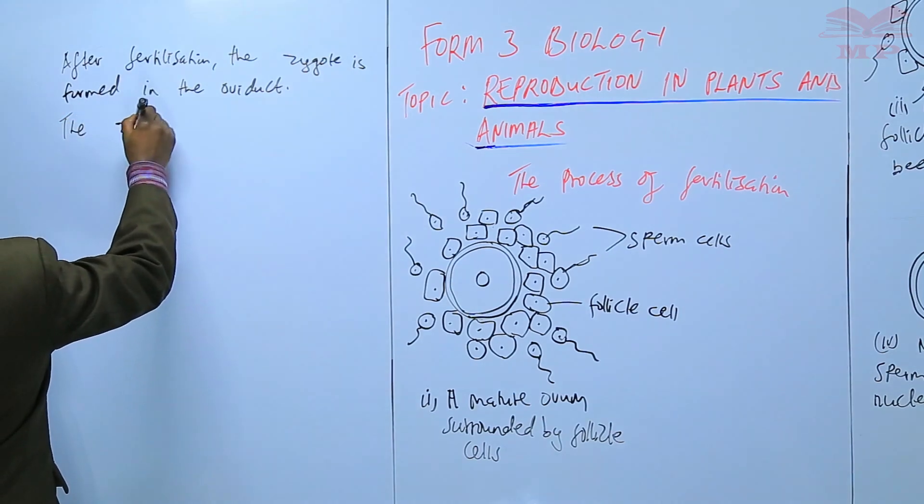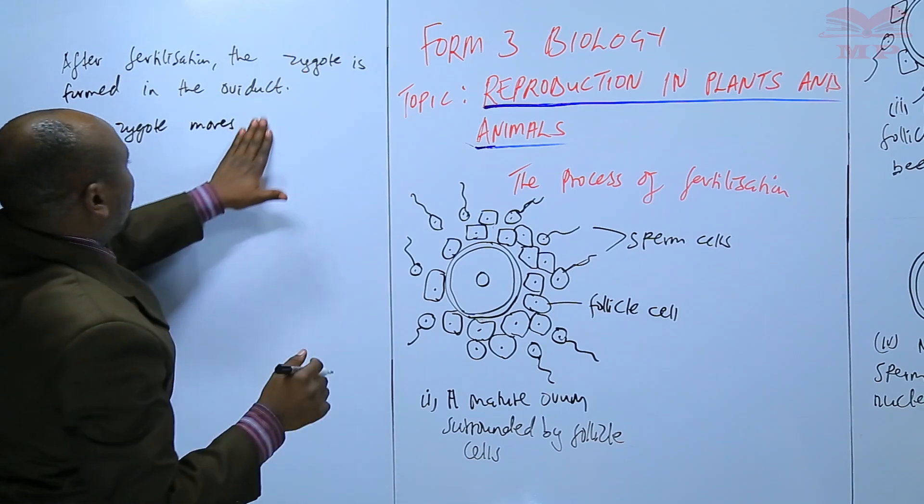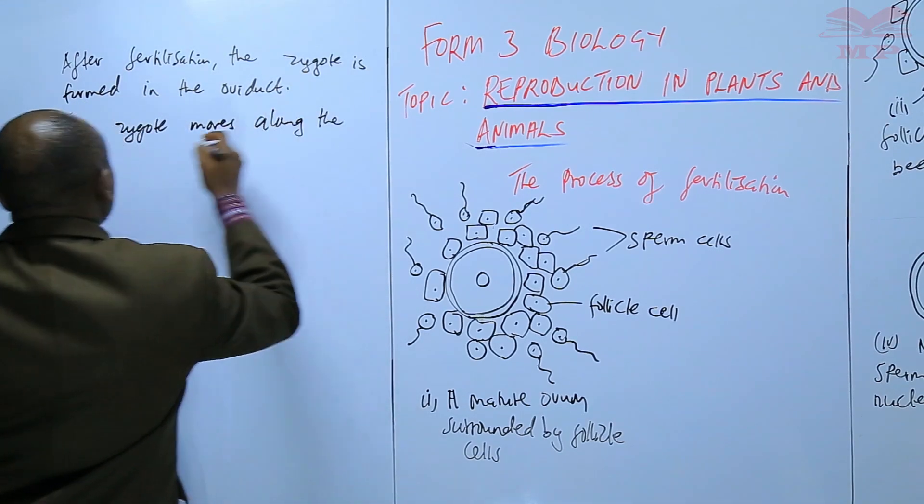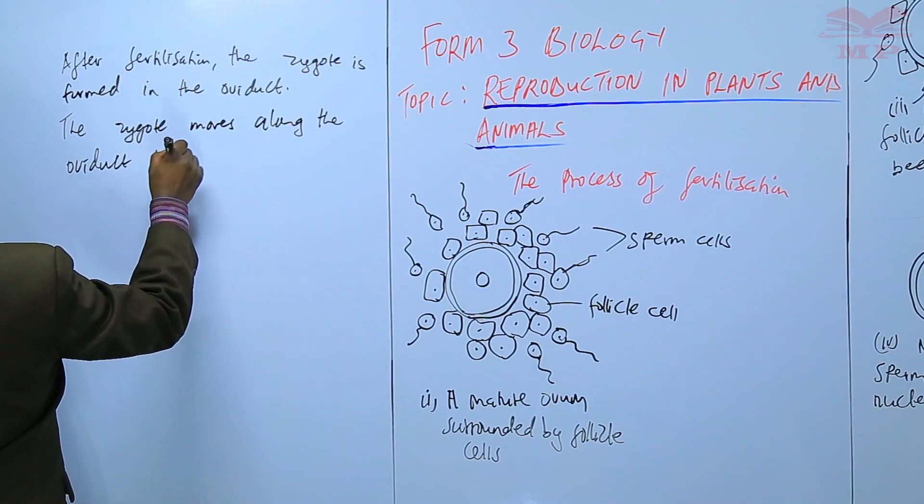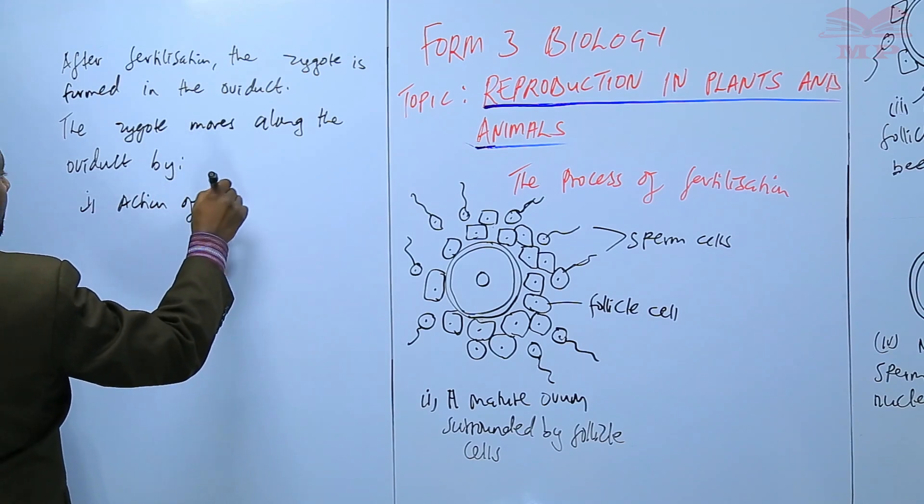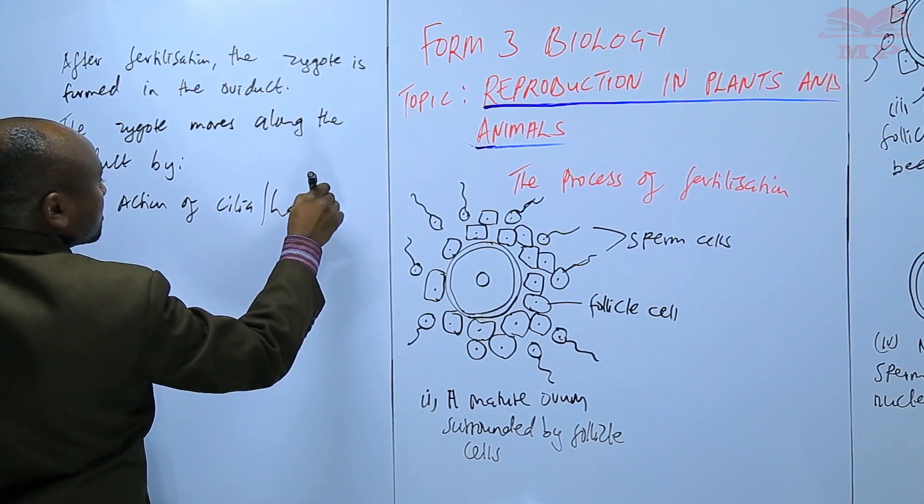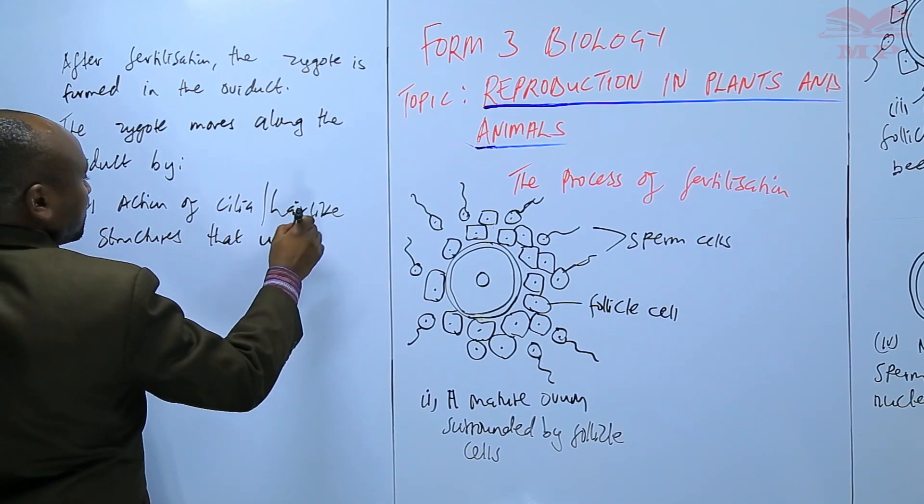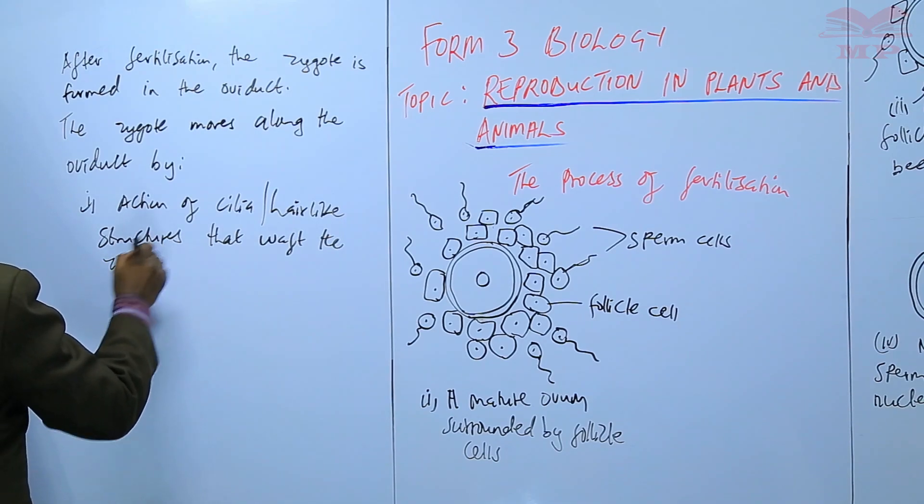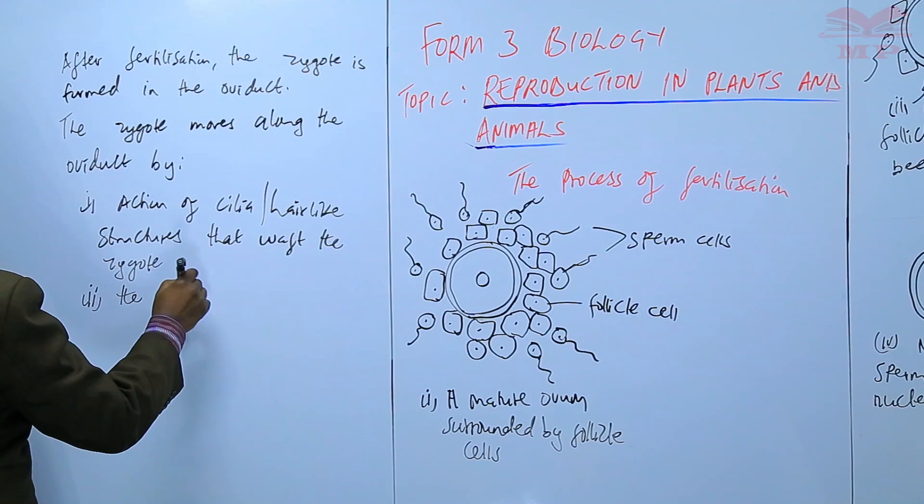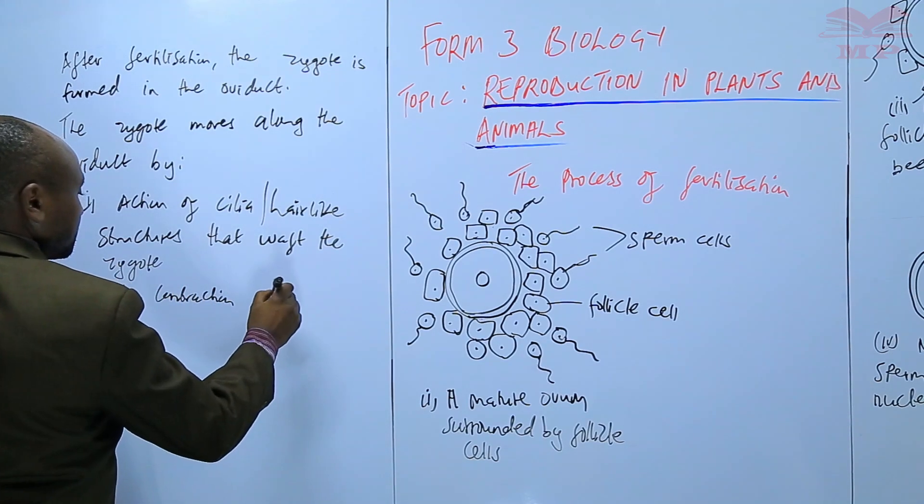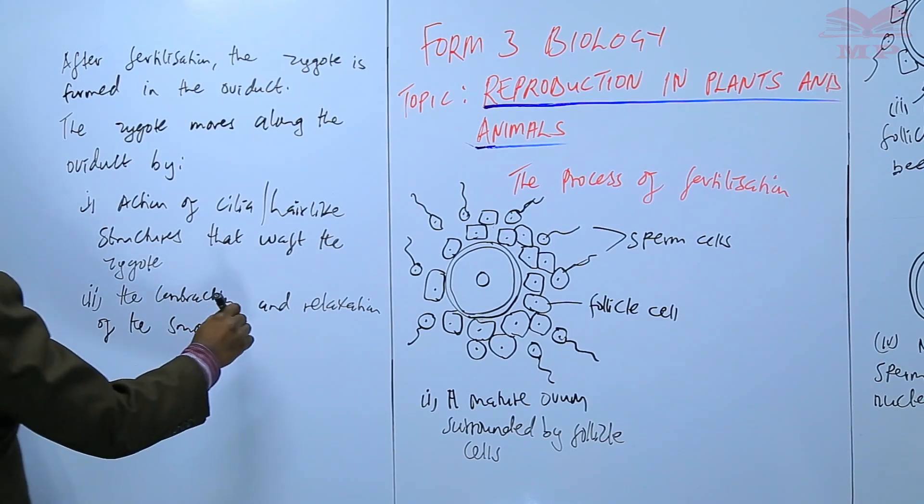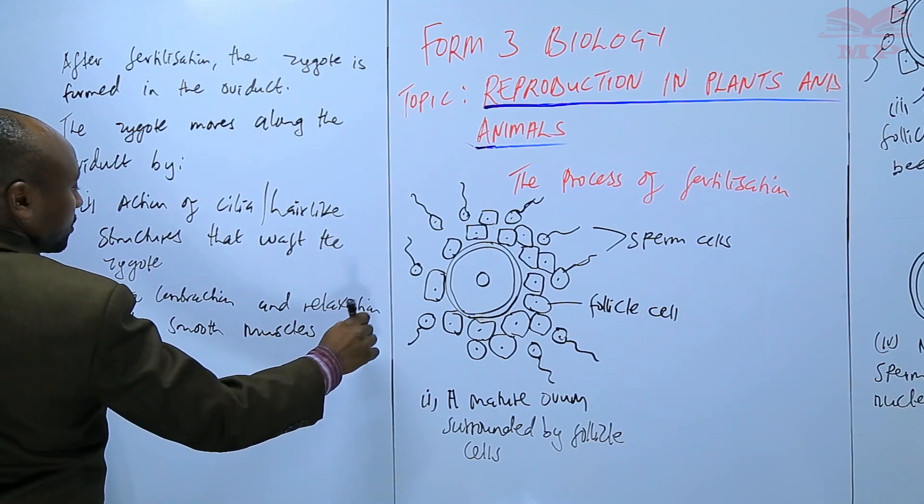The zygote moves along the oviduct by one, the action of cilia, which are hair-like structures that waft the zygote, and two, the contraction and relaxation of the smooth muscles along the oviduct.